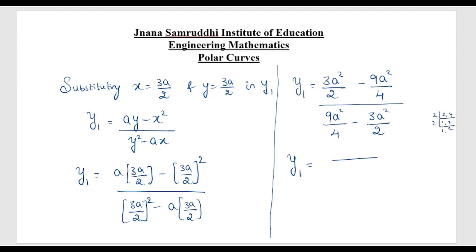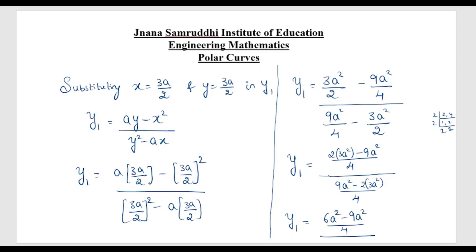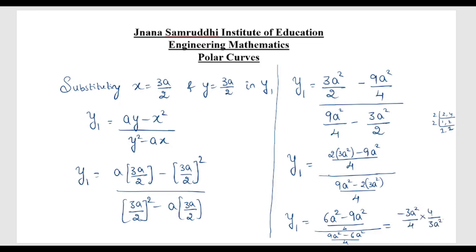For 2 and 4 the LCM is 4. So numerator becomes 6a² − 9a² = −3a², and denominator becomes 9a² − 6a² = 3a². The 4s cancel, giving y1 = −3a²/3a² = −1. Therefore y1 = −1.